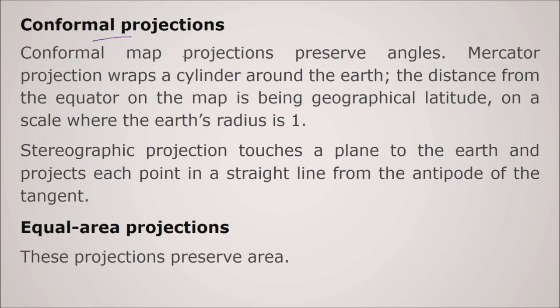Conformal projections - we have another projection. Conformal projection, the map projection preserves angle. This preserves the angle. So the Mercator projection wraps a cylinder around the earth. Mercator projection wraps a cylinder around the earth and the distance from the equator on the map is the geographical latitude on a scale where the earth radius is 1.